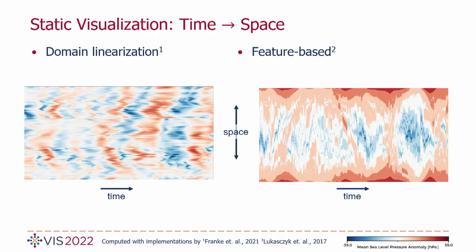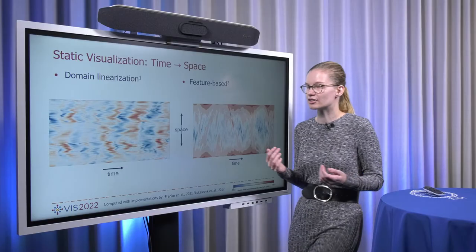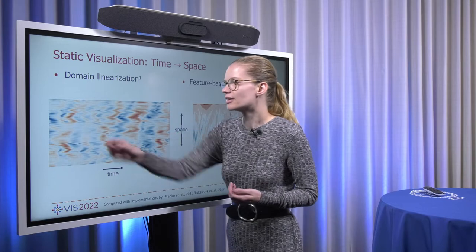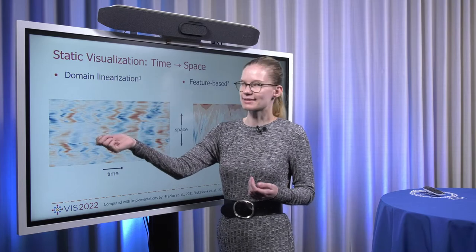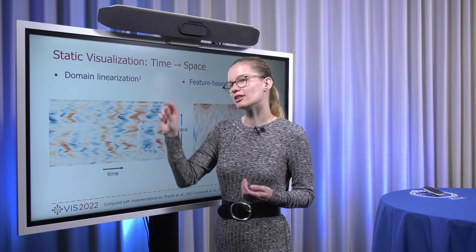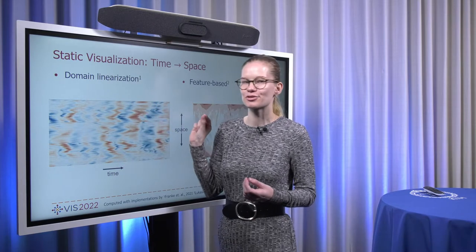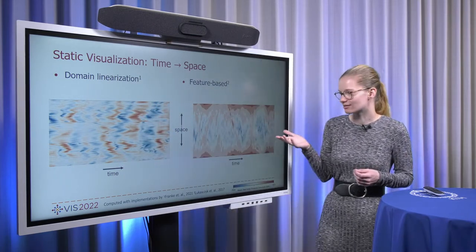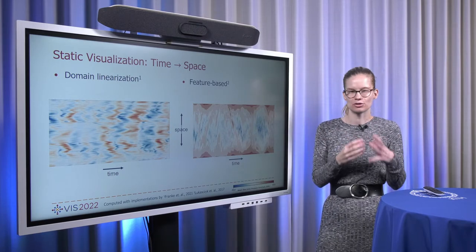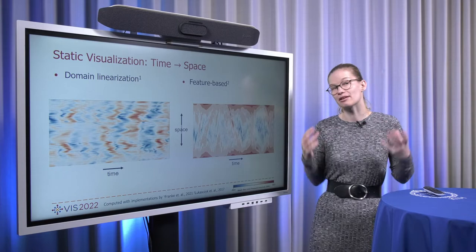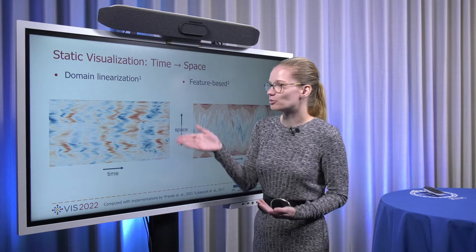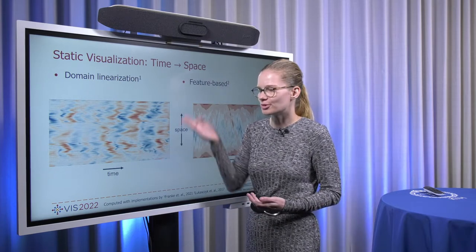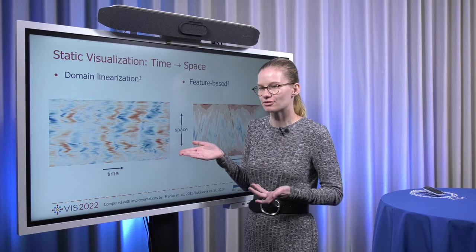Now both of these have advantages and disadvantages. We can certainly see some of the structure from the data in both. The domain linearization has the advantage that at every point here over time the spatial location remains static so we can see how in one specific location the data changes over time. And in a feature-based visualization we can see the individual features and may be able to estimate their length. But then both also have disadvantages. For the domain linearization, here the Hilbert curve, we don't see any of the features anymore that we had in the original data.